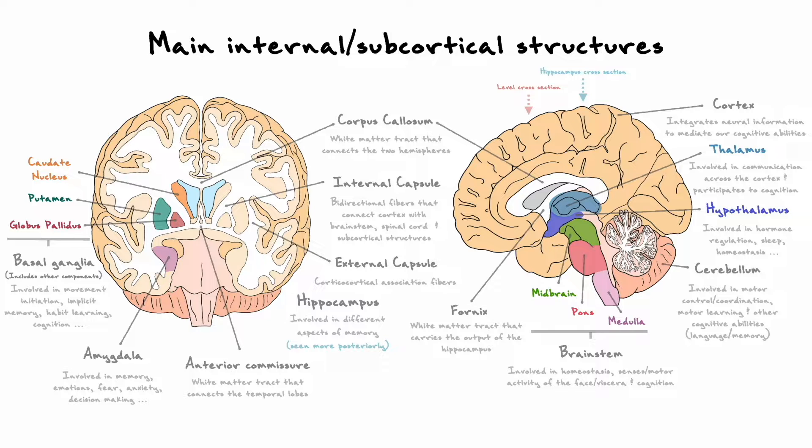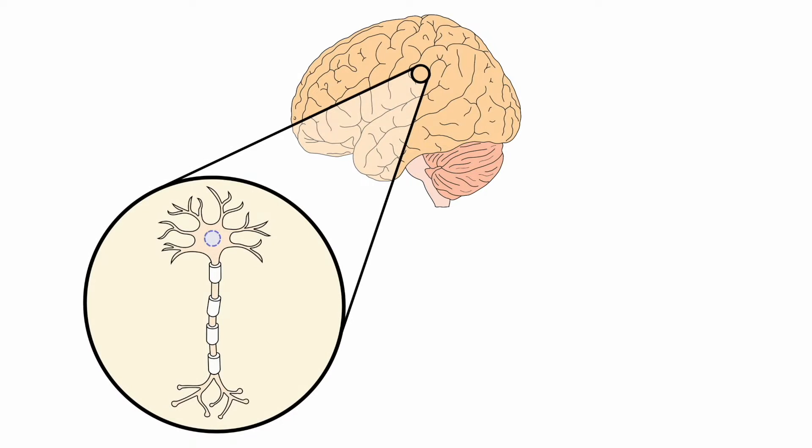This last bit of information should be enough for us to understand the main functions of the different subcortical structures. Now that we have an idea of how the cortex is divided, let's consider what happens inside the grey matter to make all of this possible.